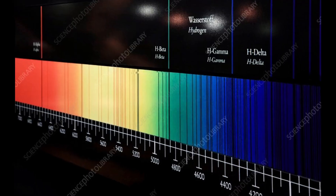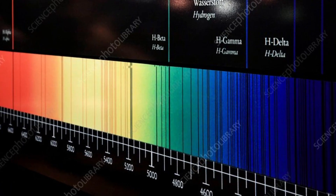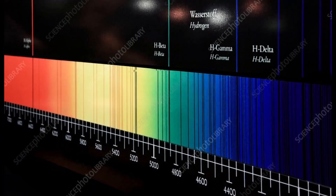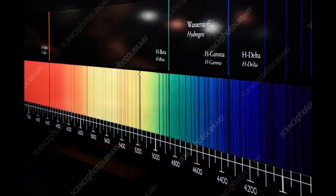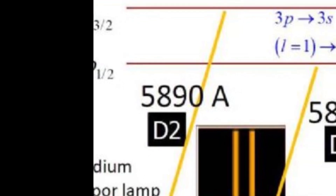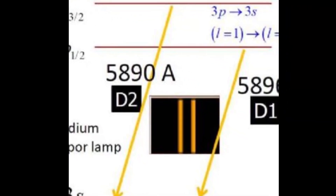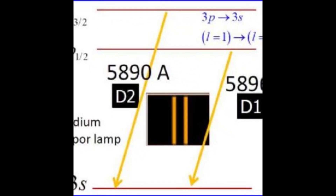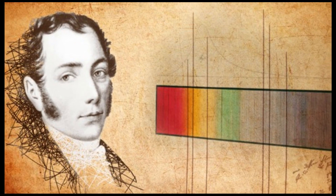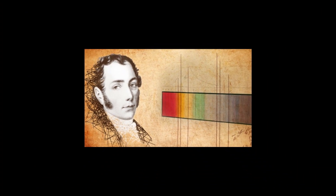Fraunhofer not only recorded the first astronomical spectrum, he recorded the first ever high-resolution spectrum. Fraunhofer's spectrum was the first to resolve discrete line transitions. However, he died before he could study this phenomenon more thoroughly.